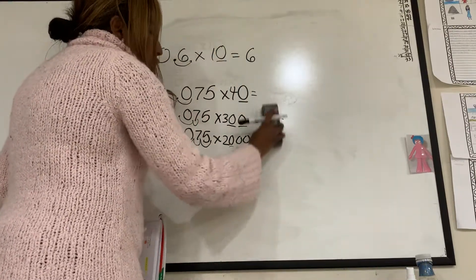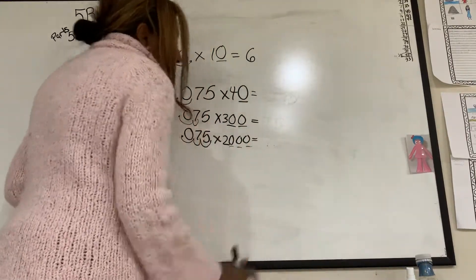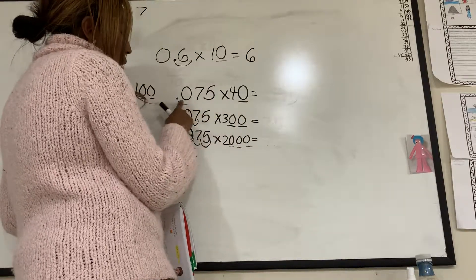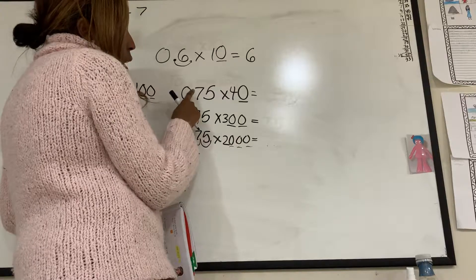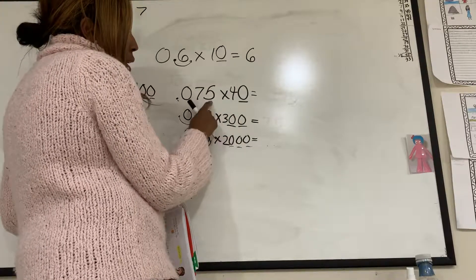Obviously, my answers are going to change a little. Now, I see there's a zero here. So I'm still going to do this move there. But then I'm going to just times 4 by the number.